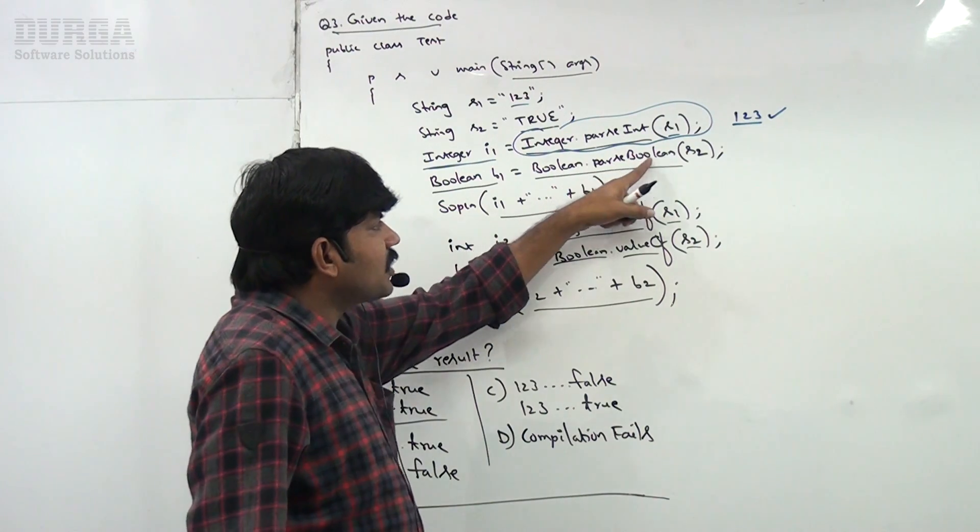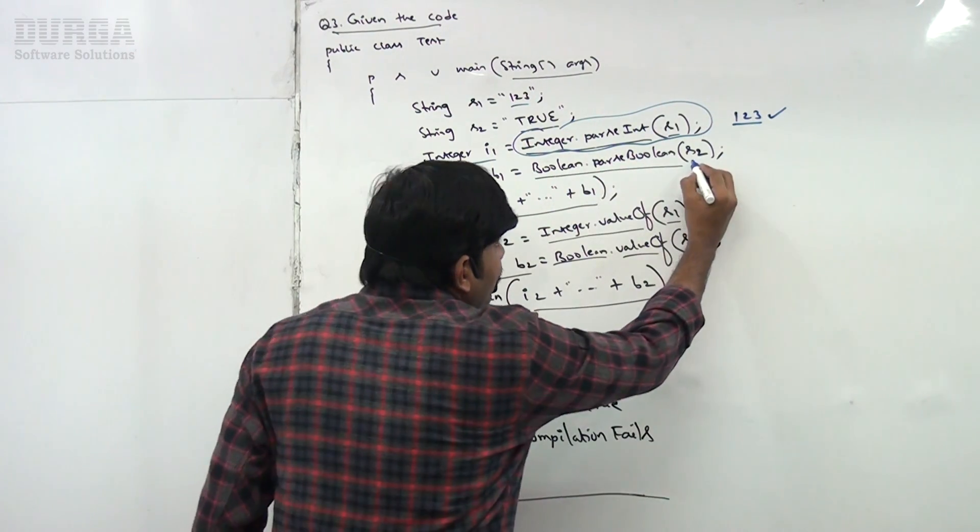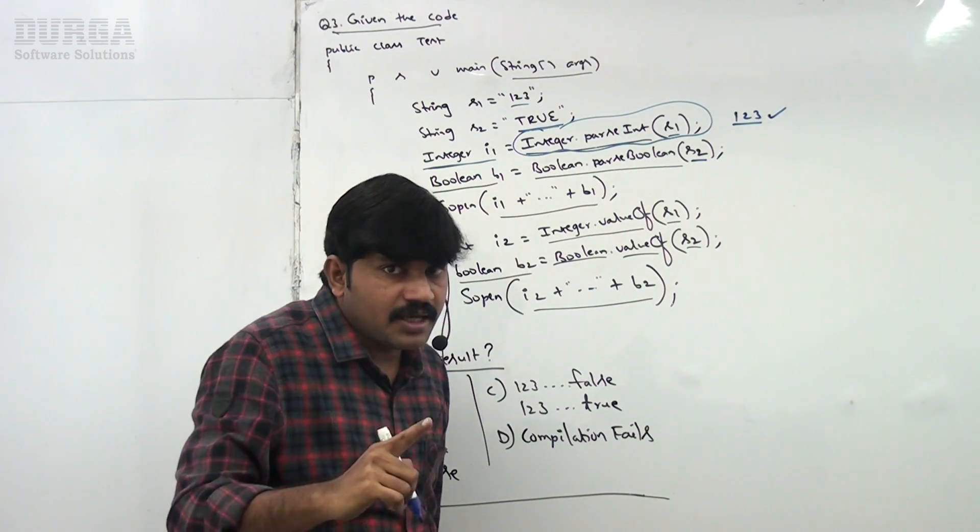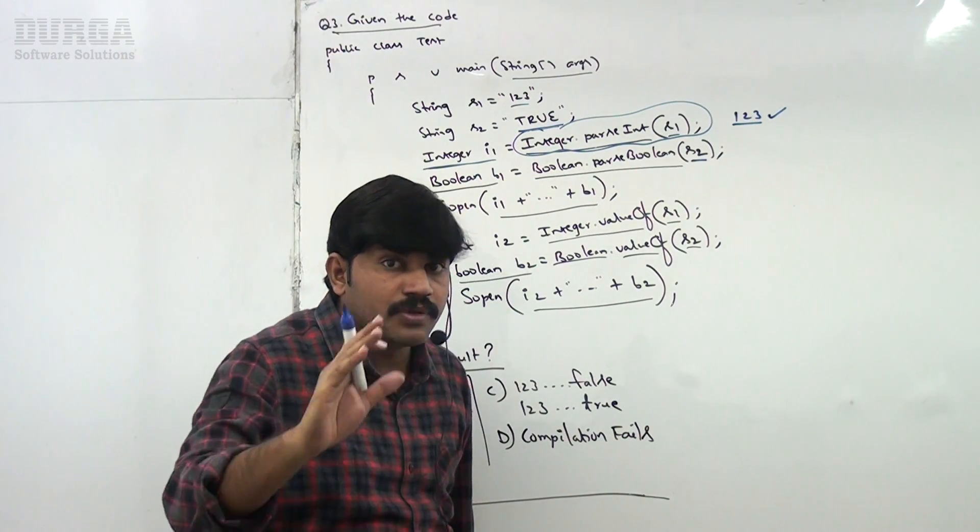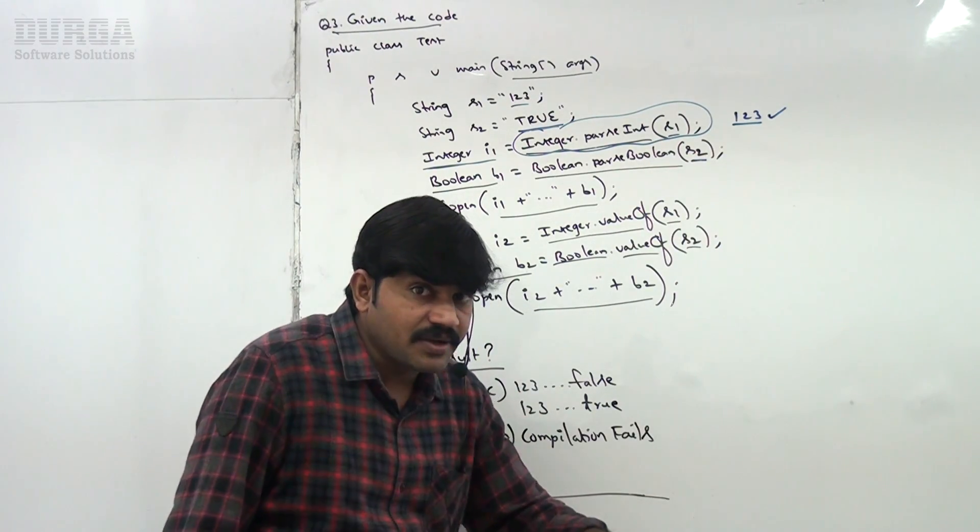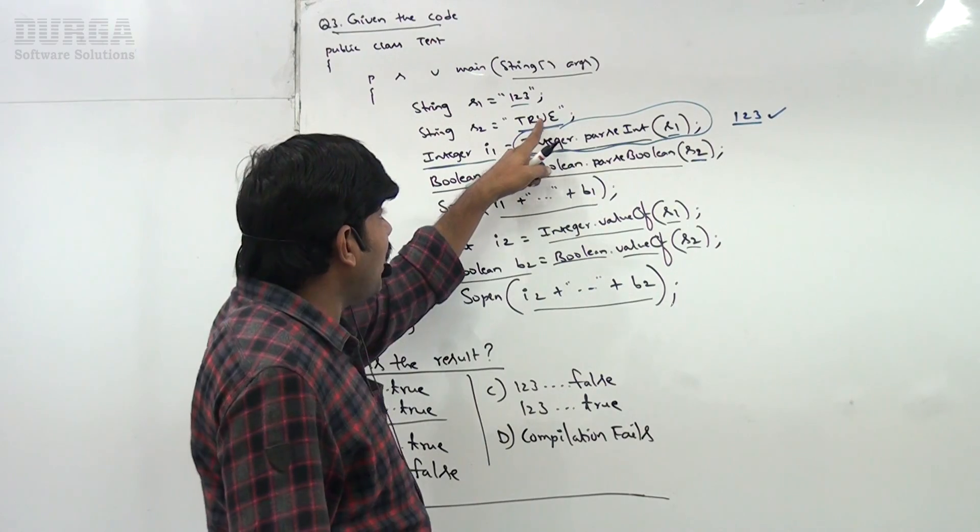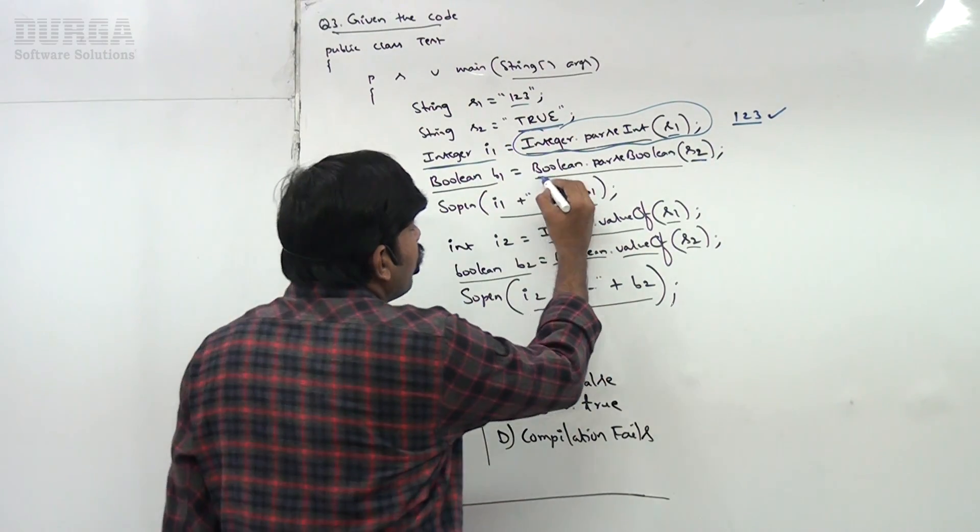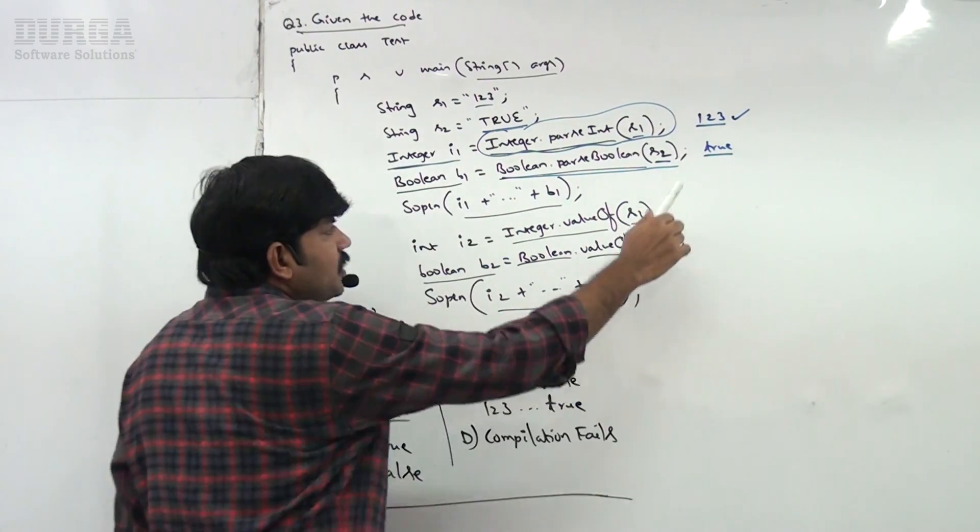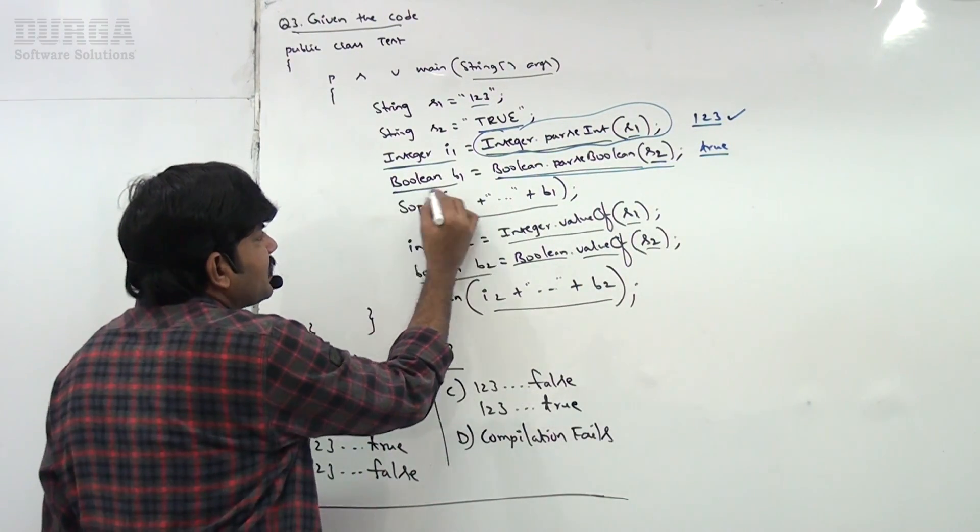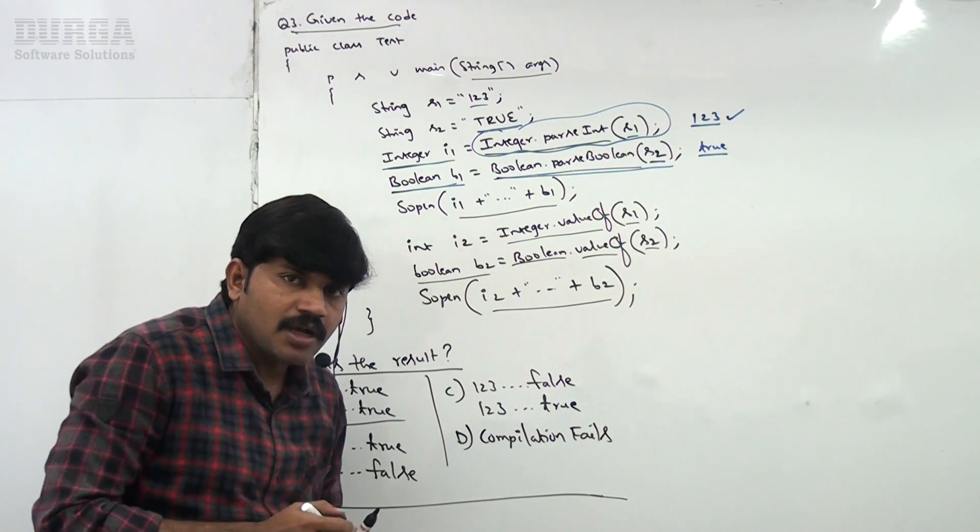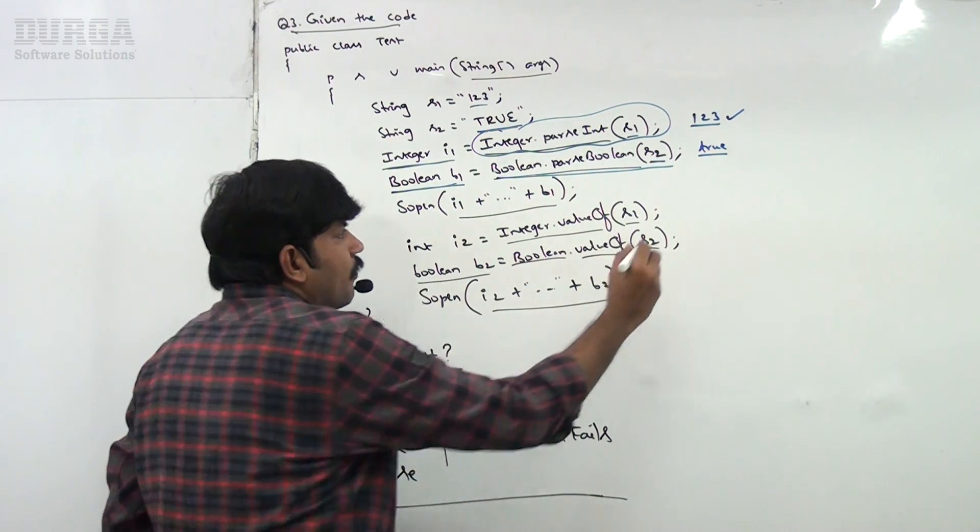Next, Boolean.parseBoolean of TRUE sir. Here s2, s2 means TRUE sir. If the string is T-R-U-E either lowercase or uppercase, it's always treated as true. Otherwise it is treated as false. But here T-R-U-E, now we will get the true Boolean primitive. This Boolean primitive we are assigning to Boolean object, primitive to wrapper object by auto-boxing, acceptable, no problem, no problem, right?